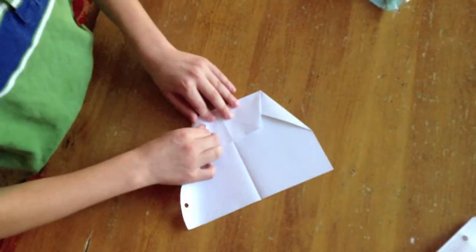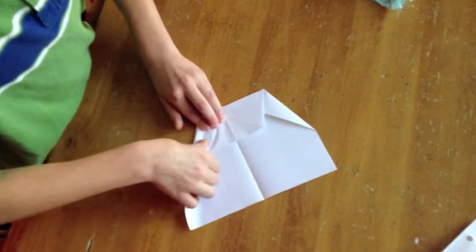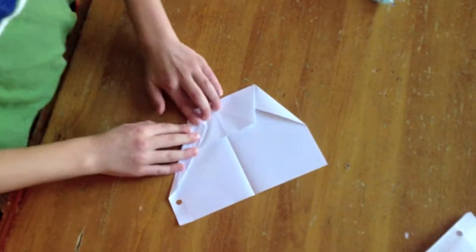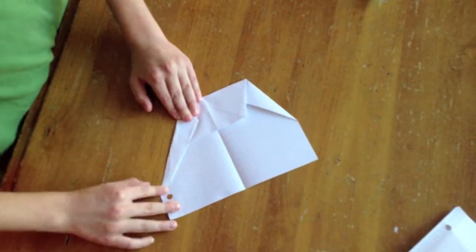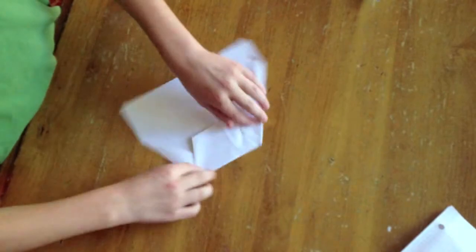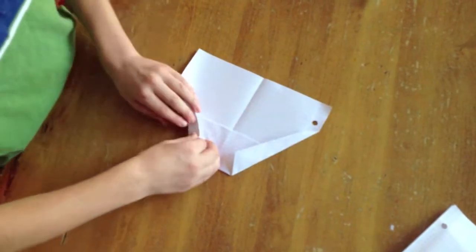Then I am folding the corners along another crease that you cannot see on the camera. And I am doing it again on the other side.